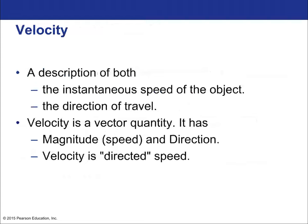Velocity is a vector — it's a description of both the instantaneous speed of the object and the direction of travel. That's what makes it a vector: magnitude and direction. Speed is half the information that is included in velocity.